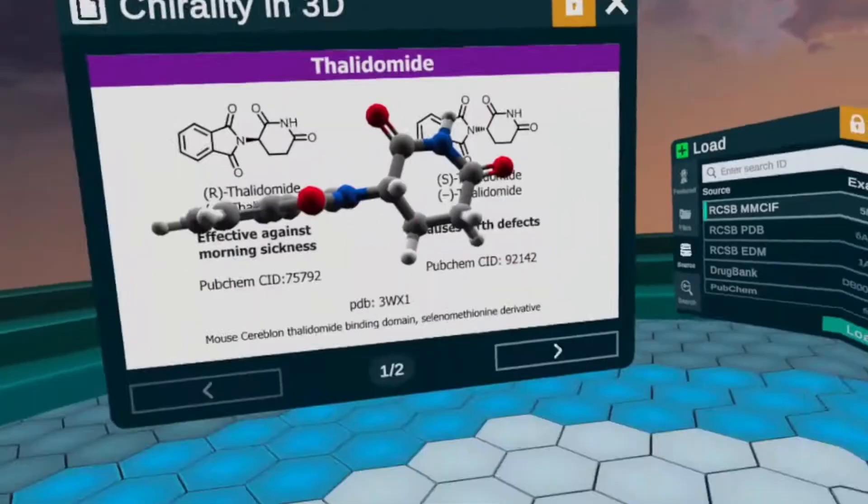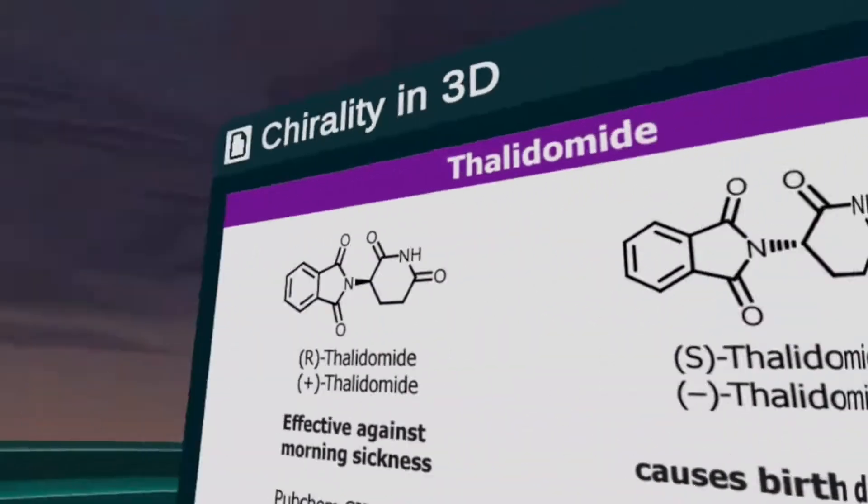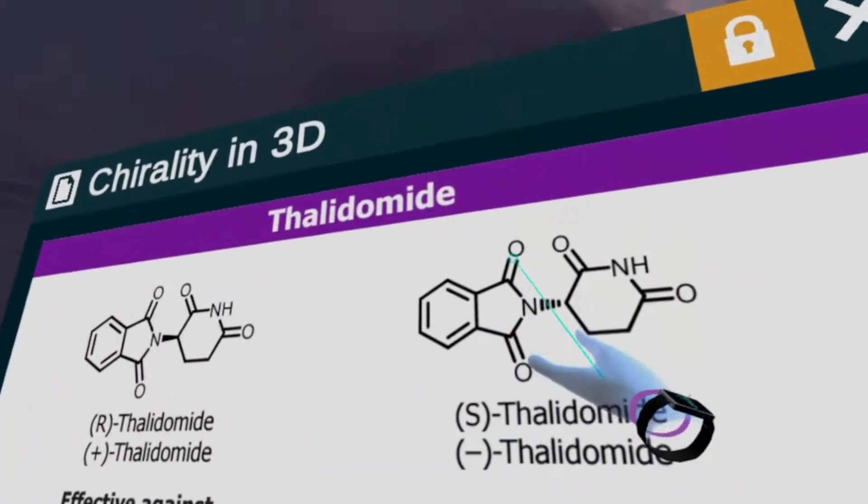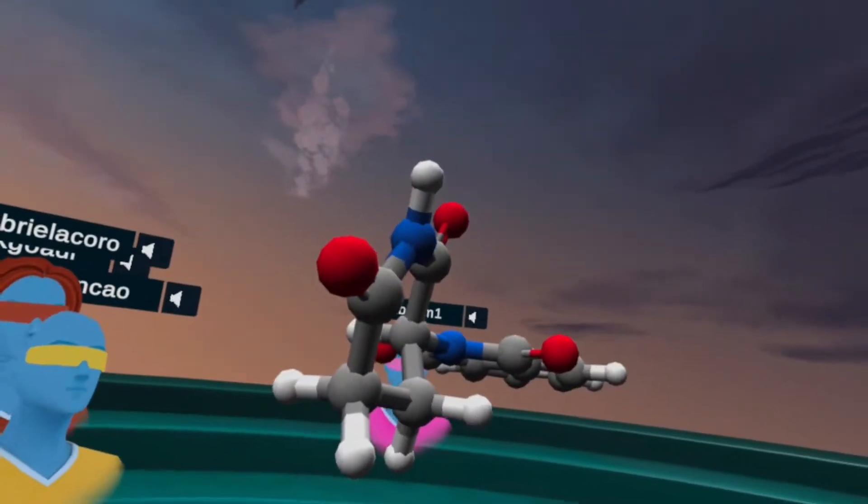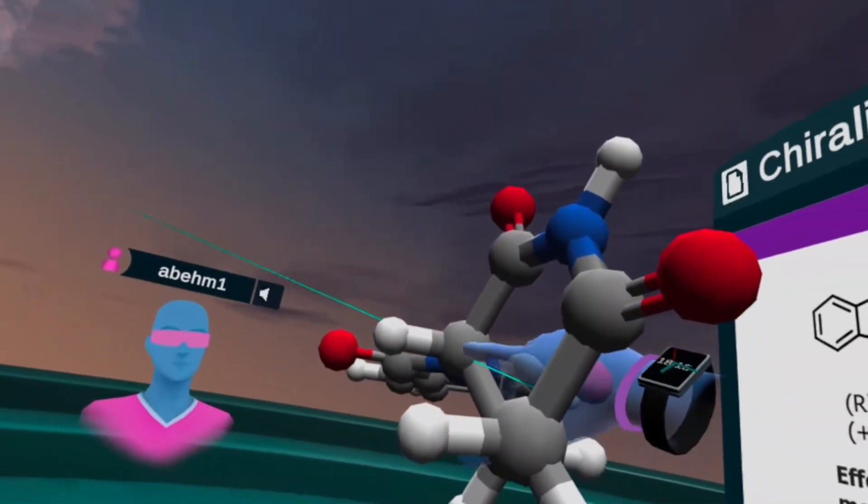Hey everyone, so the answer is the one on the right side. It's the S enantiomer that causes birth defects. And let's pay attention to that chiral carbon there, so that carbon is this carbon here.